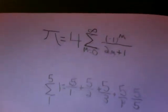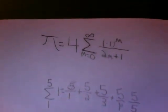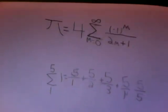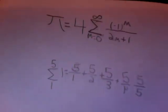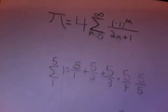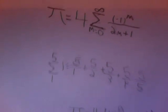What you would do is you would do 5 over 1 plus 5 over 2 plus 5 over 3 plus 5 over 4 plus 5 over 5.